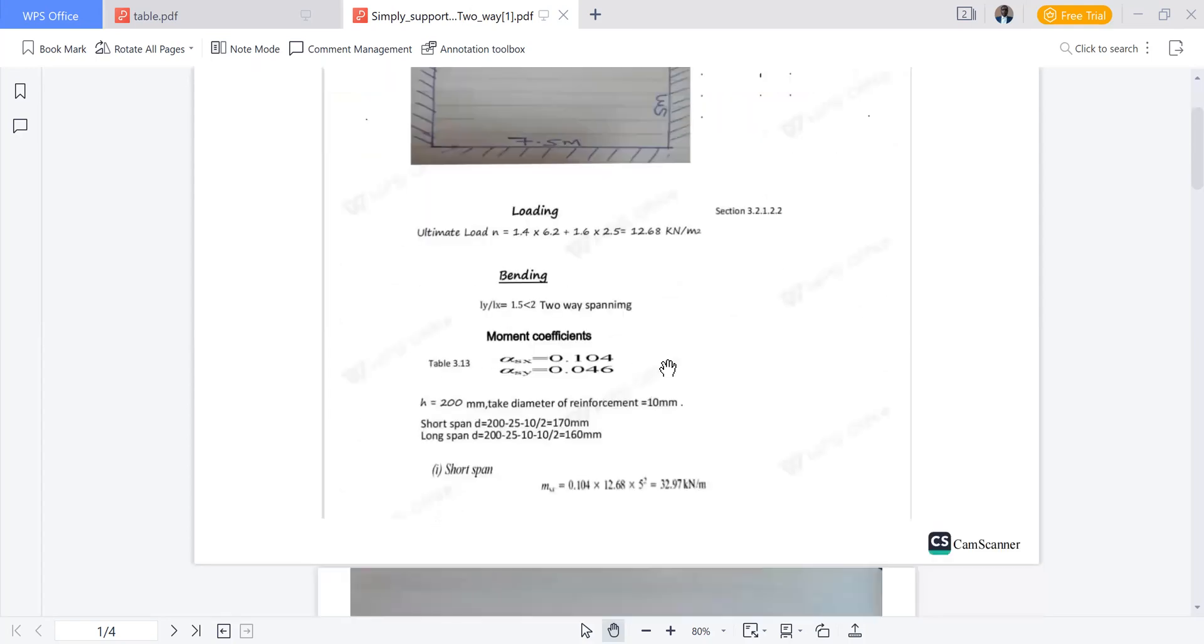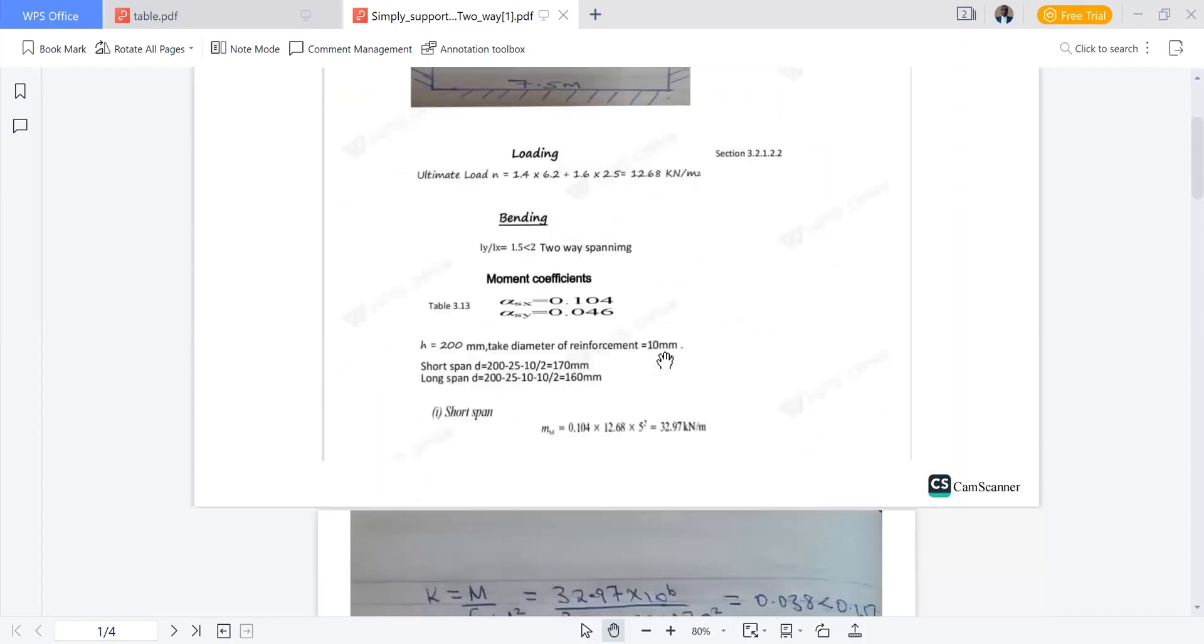From there we'll go to bending. We have to determine whether it is one-way or two-way spanning. To confirm that is by taking the longer span divided by shorter span which is 7.5 divided by 5 giving us 1.5 which is less than 2. We say it's two-way spanning.